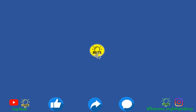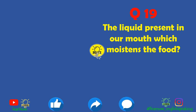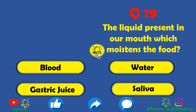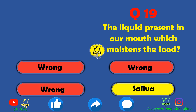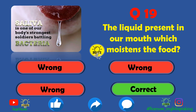Next question: the liquid present in our mouth which moistens the food is called what? Blood is wrong, water is wrong, gastric juice is also wrong. The correct answer is saliva — saliva present in our mouth moistens the food and makes passage of food smooth so it can move down easily.